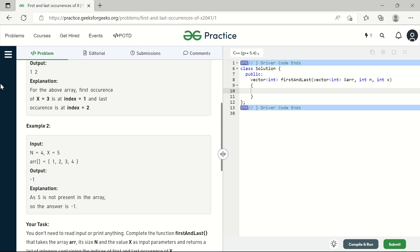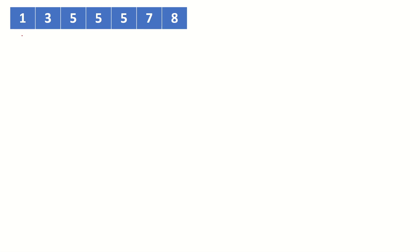Before we write the solution, let's perform a dry run with some set of numbers. We can see that element 5 appears three times in the list — the first occurrence is at index 2 and the last occurrence is at index 4. This is the element X that we are searching for.